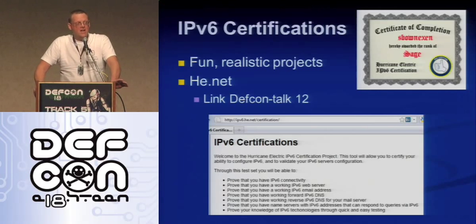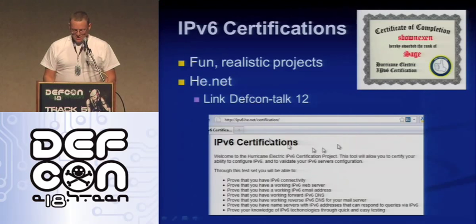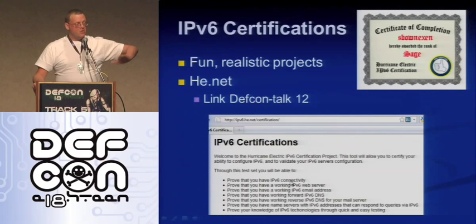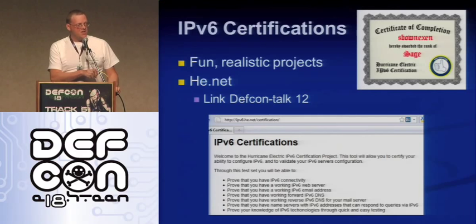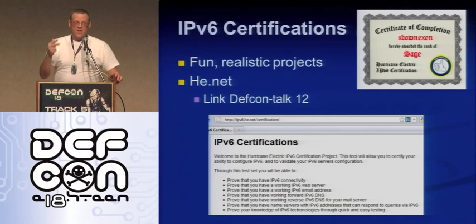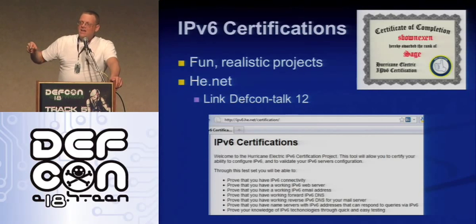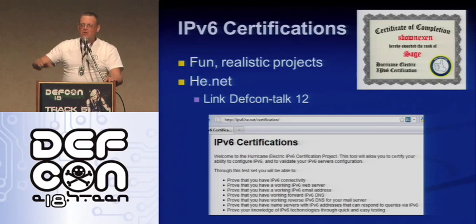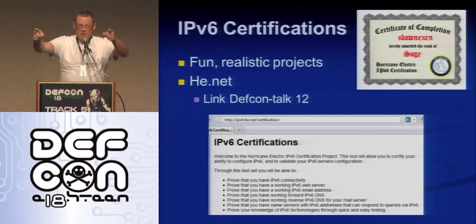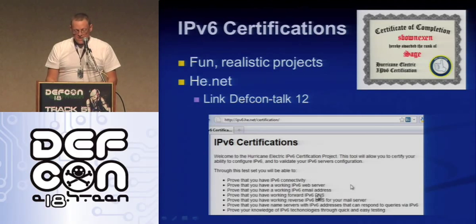Let me show you the way to do this that's fun. Hurricane Electric made a certification process and I finished it, and all my students are going to suffer through it. You first prove that you're an IPv6 client, then you prove that you run a web server that responds to IPv6 requests, then you set up a mail server that takes IPv6 email, then a DNS server that takes IPv6 DNS resolution and hands out the AAAA record, and then a DNS server that propagates an IPv6 glue record to the root of your domain.